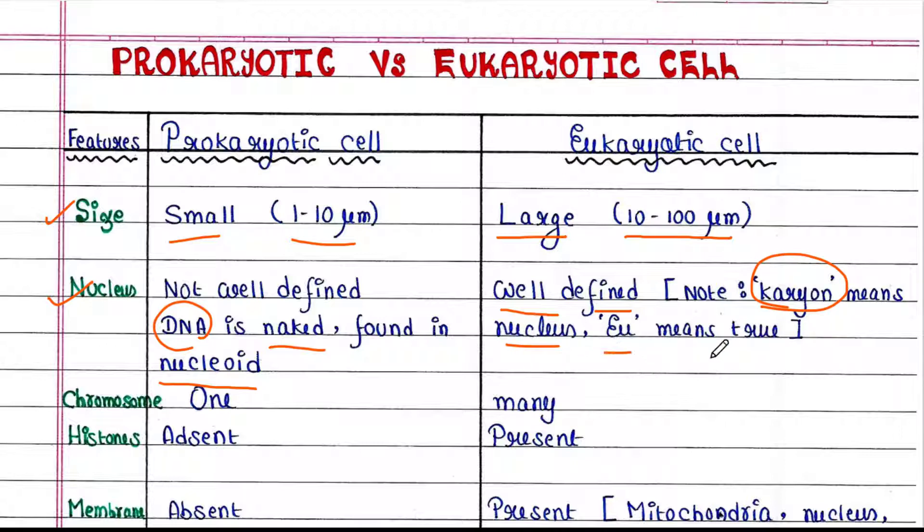And eukaryotic means true nucleus is present in the cell. And prokaryotic means before nucleus.